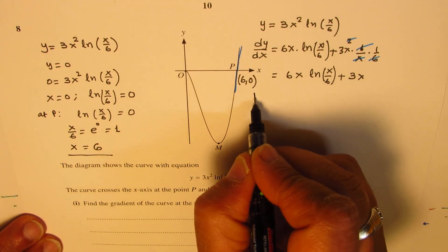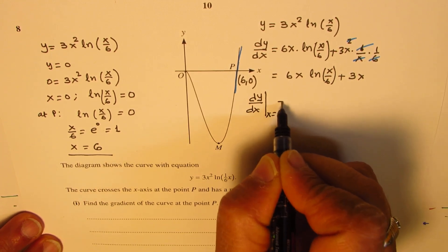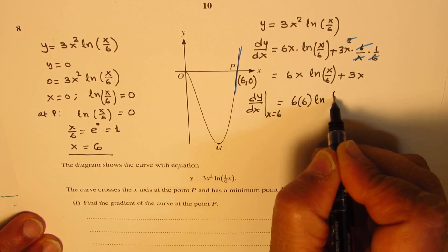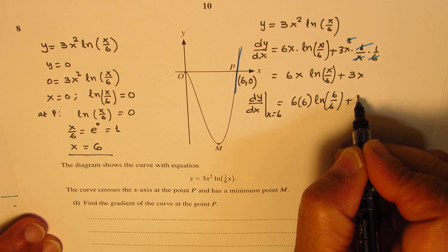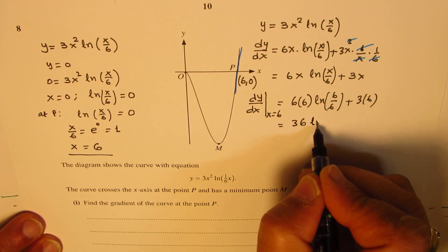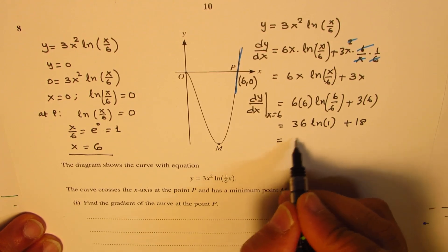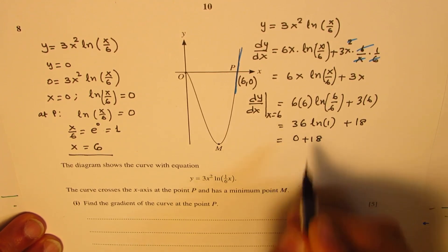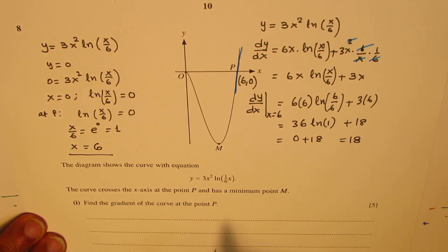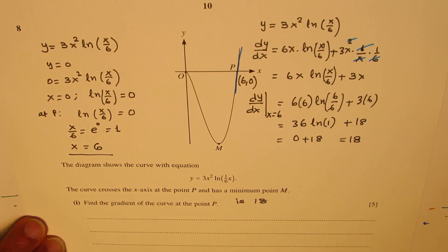We need to find the gradient. So gradient at P will be dy/dx when x equals 6. Substituting 6 for x, we get 6 times 6 ln(6/6) plus 3 times 6. So that is 36 ln(1) plus 18. Now ln(1) is 0, so we get 0 plus 18, so we get the gradient as equal to 18. So the solution here is that the gradient at P is 18.